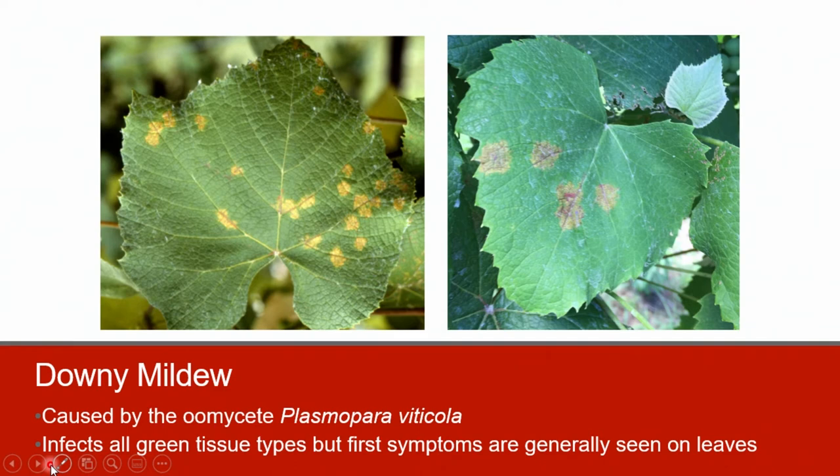Symptoms of downy mildew first appear on the leaves, and leaf symptoms are very distinct and easy to recognize in the vineyard. Initially the lesions are chlorotic, and as disease develops the lesions turn a grayish brown color. The lesions develop over veins and are irregular in shape.